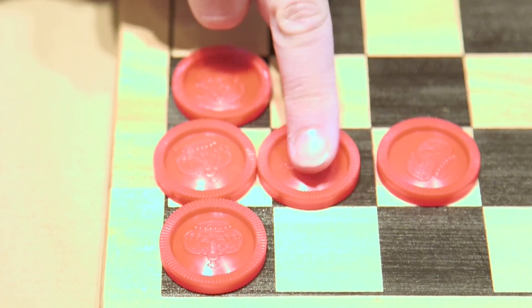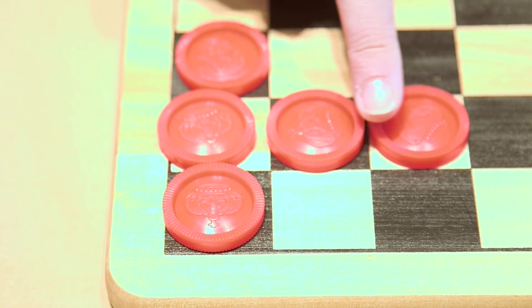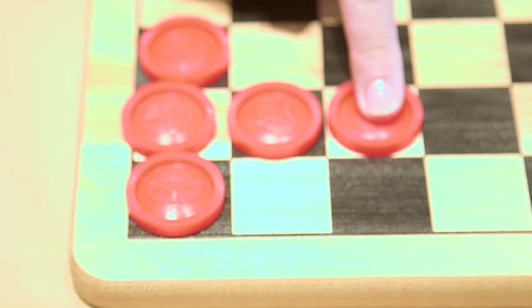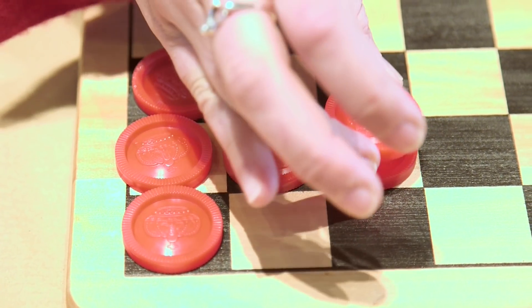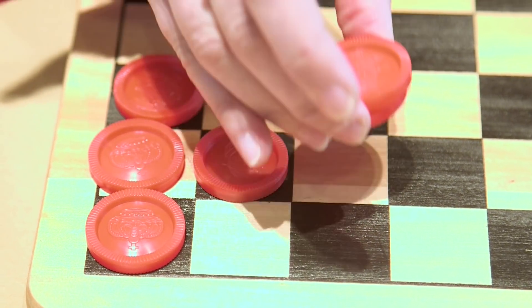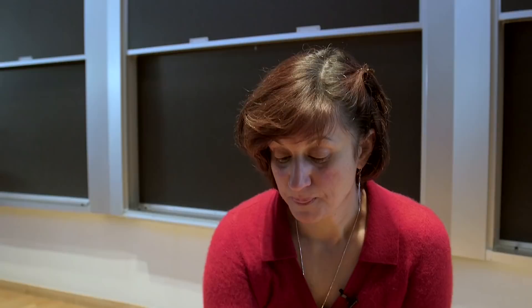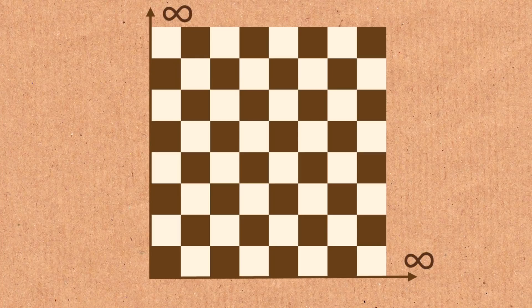For instance in this situation this guy cannot clone because the cell to its right is not free. So in other words we cannot put two or more clowns in one cell. Okay now the board as you can see is a chessboard what we're showing here but the actual game is played on an infinite board which is infinite to the right and up.